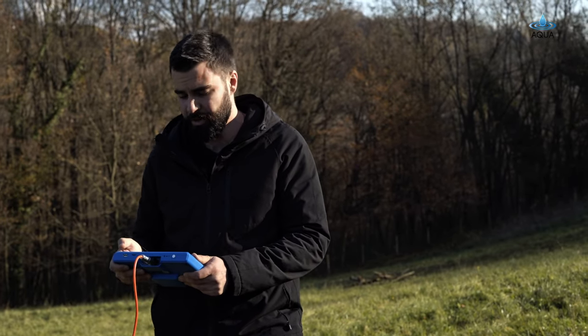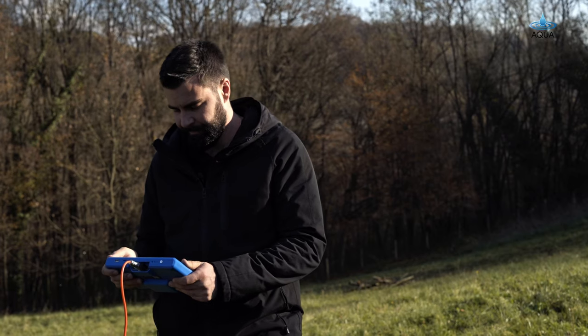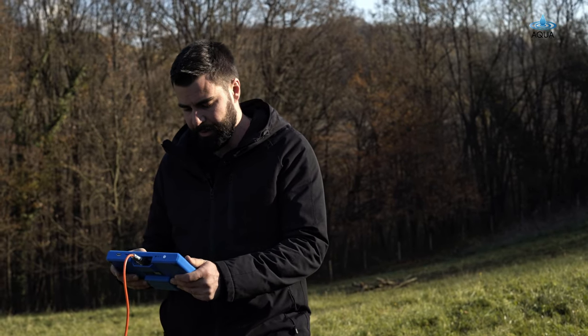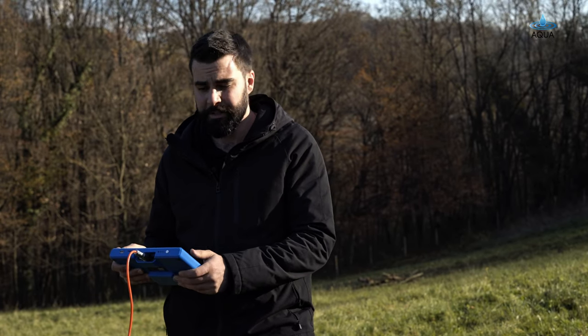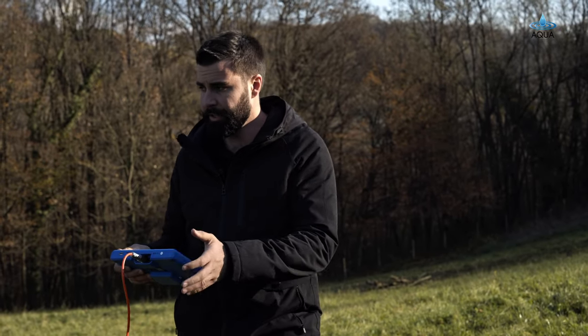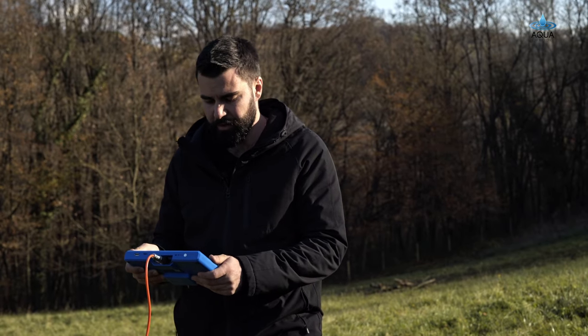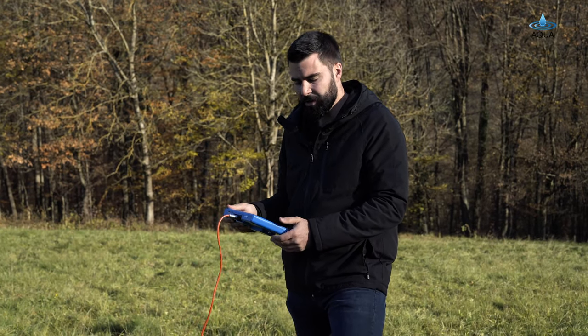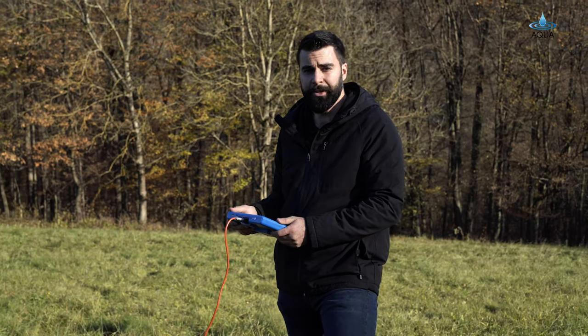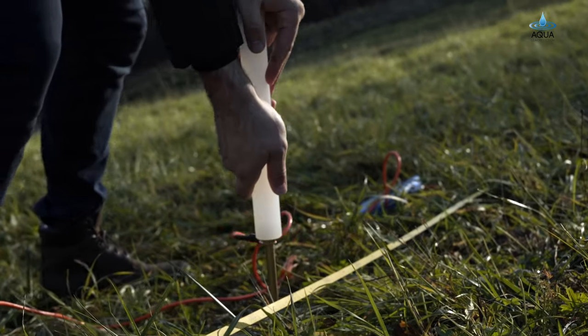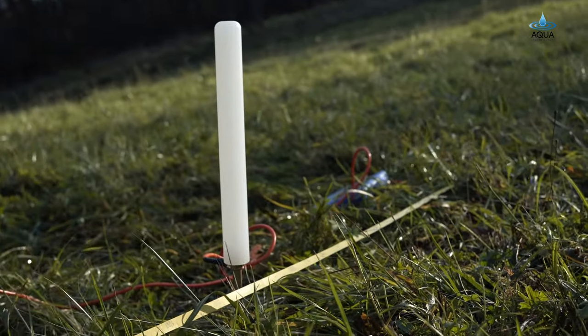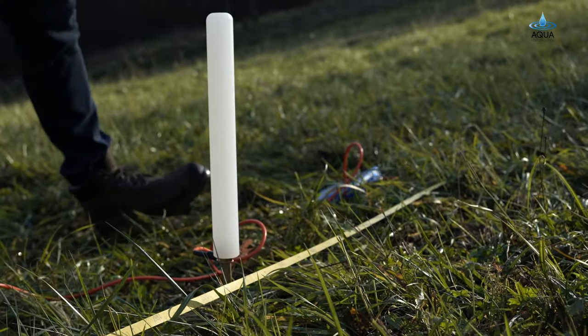Once you've got your rods inserted into the ground, you'll proceed by clicking on the profile survey option. Once you've got your profile survey open, you'll click on record. This will only take a moment while it's recording the profile survey of the ground. Once the profile survey has finished scanning the first point, you'll then need to proceed by moving the rods one meter forward along the tape measure on both ends.